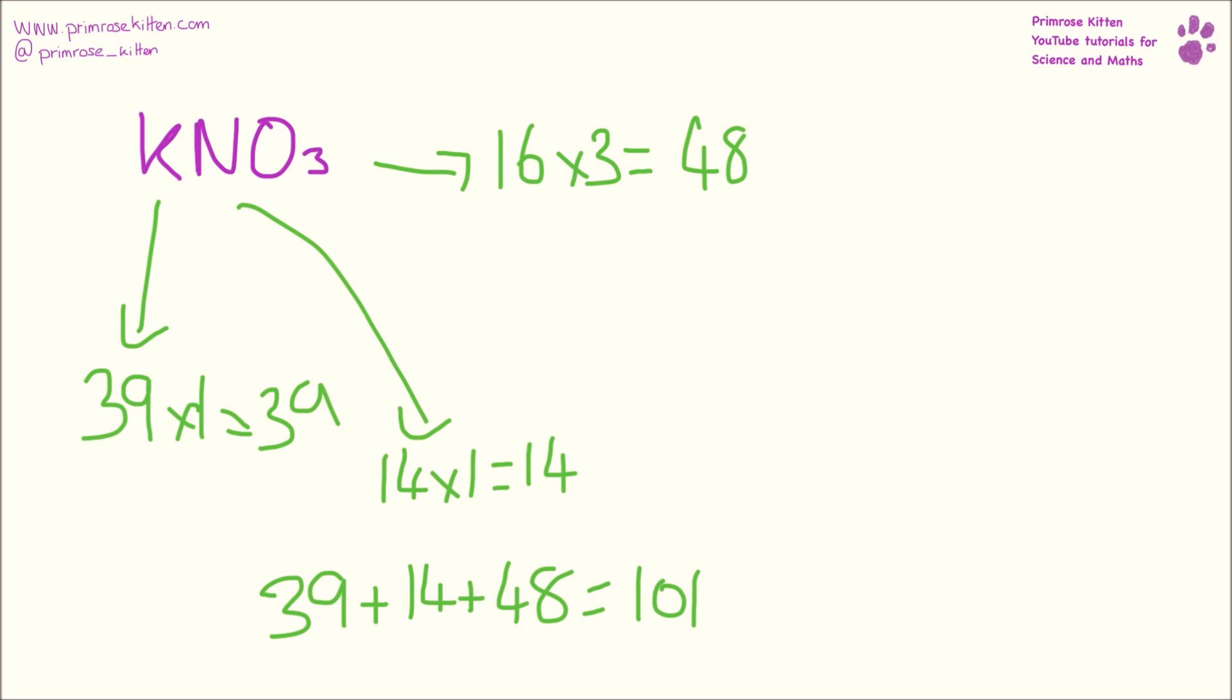If we wanted to work out the percentage mass of nitrogen in this, we would take the total mass of nitrogen, which is 14, divide it by the total, which is 101, not 100, 101 times that by 100, and we will get rounded 14%.